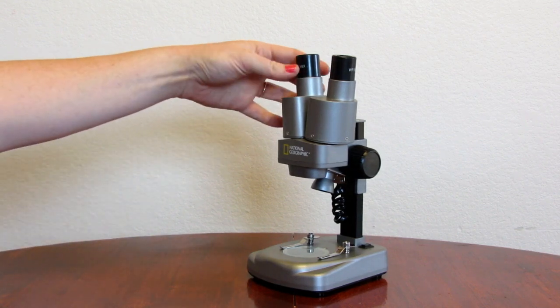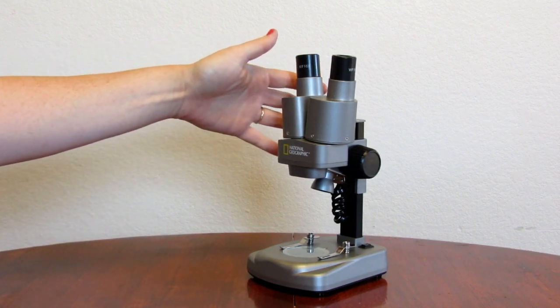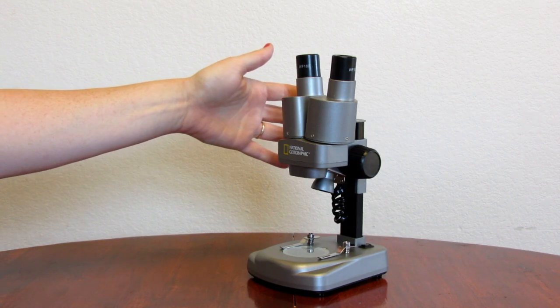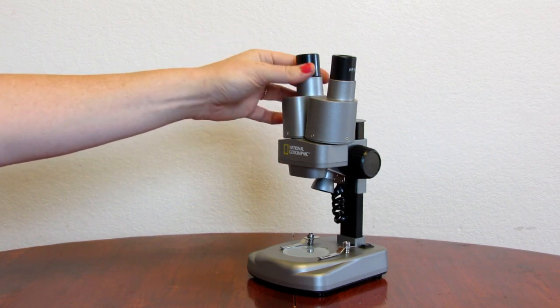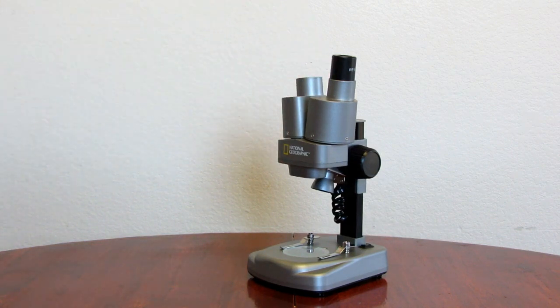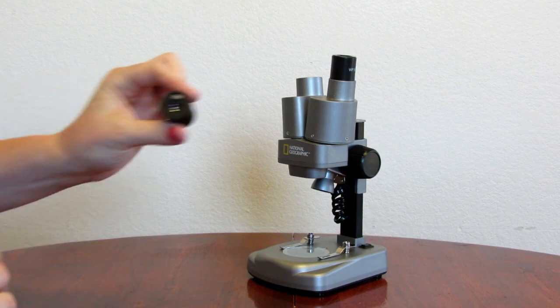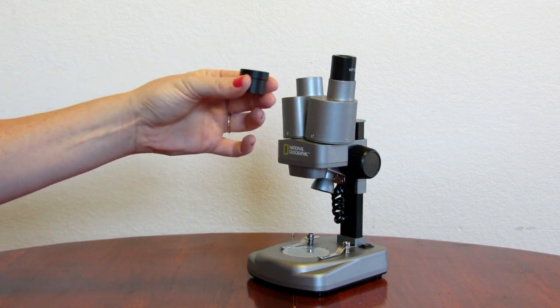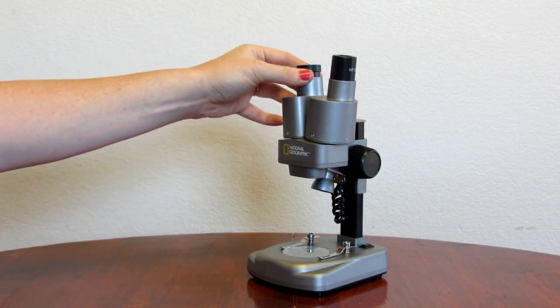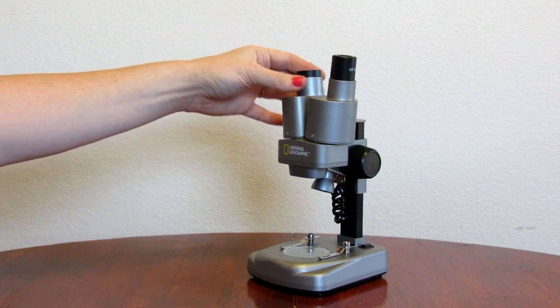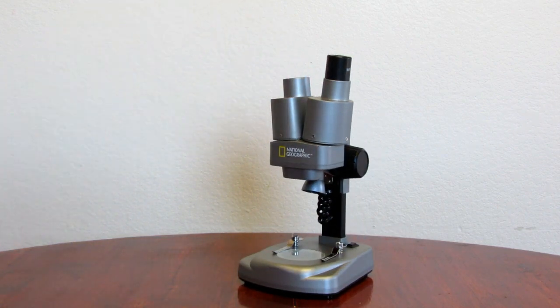You have your 10x magnification that is already in the microscope when you open it from the box. They give you the 25x magnification and you literally just have to place it in, so it's very easy to exchange lenses.